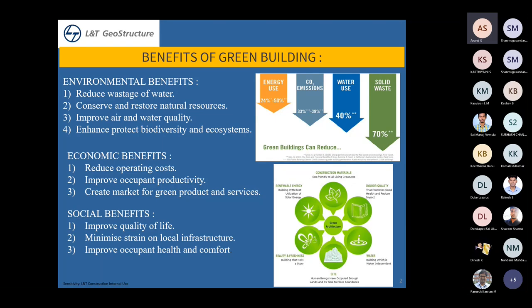Green buildings also improve quality of life. With natural lighting and good ventilation and air circulation, your health improves. Natural light and fresh air contribute to a healthy body. For instance, doctors have advised people who work from home that reduced sunlight has lowered their vitamin D levels, weakening their bones — so natural lighting is essential.